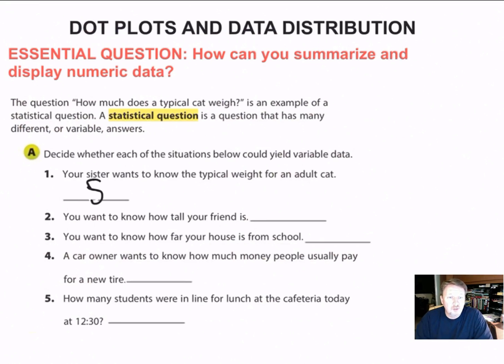You want to know how tall your friend is. Well, it's only saying one friend, so they can only have one height. So that is a non-statistical question. You want to know how far your house is from the school. Well, your house is not moving, so no, that is not going to give you a variable amount of answers. A car owner wants to know how much money people usually pay for a new tire. Well, it depends on the tire, so yeah, you're going to definitely get some different answers there. So that's definitely a statistical question.